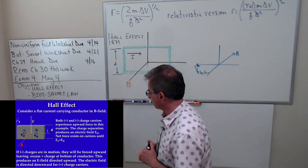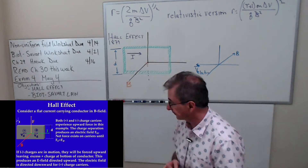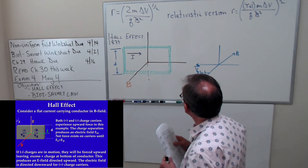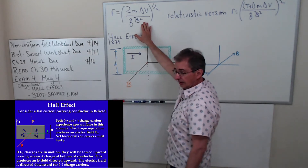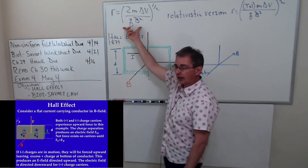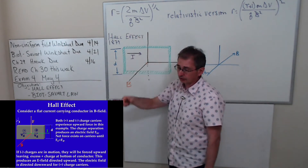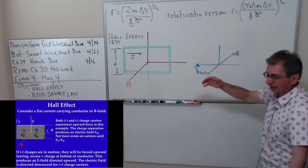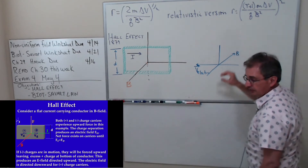As a reminder, Exam 4 is in the first week of May. Today I'm going to cover the Hall Effect briefly and the Biot-Savart Law. One thing I forgot to mention: for the motion of a charged particle in a magnetic field, we get its velocity from knowing the potential difference it was accelerated through. If one wanted the relativistic version, when gamma equals one you get the non-relativistic expression — that's just for your information.